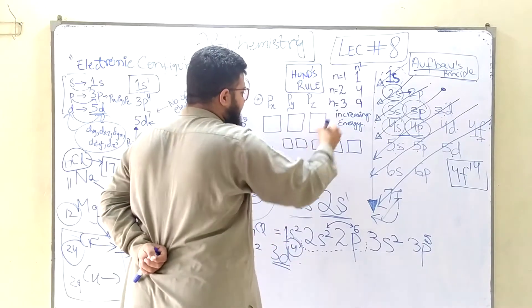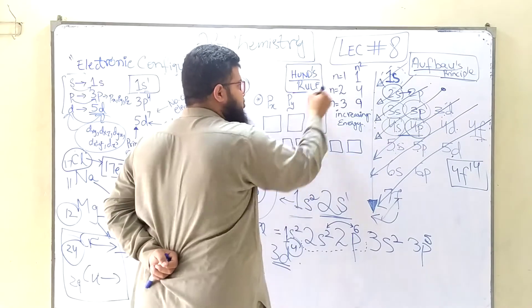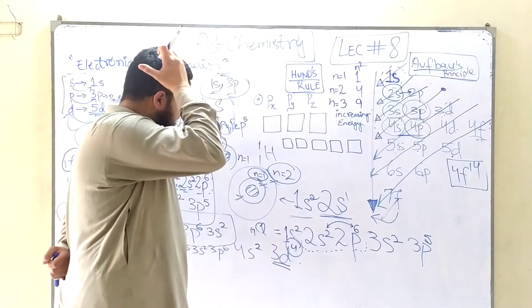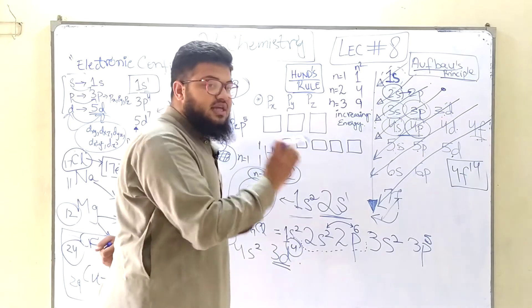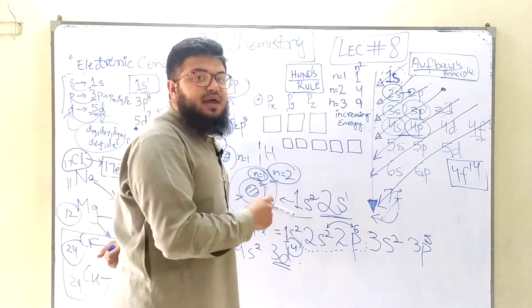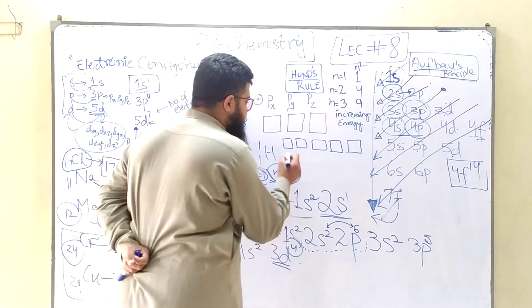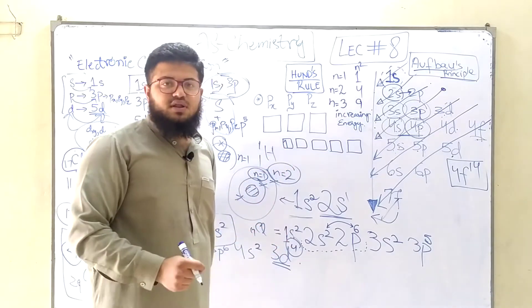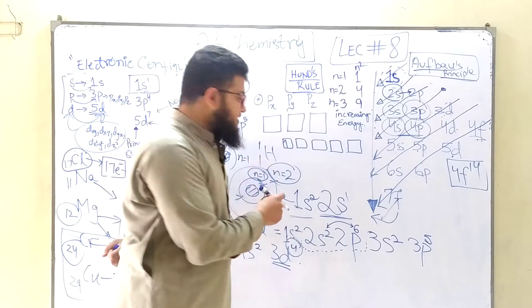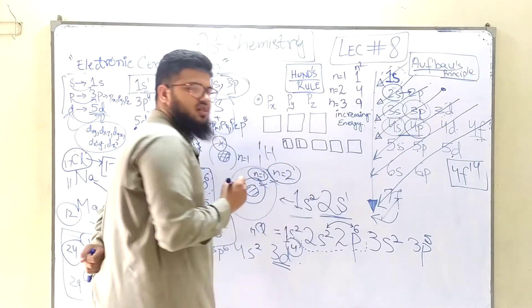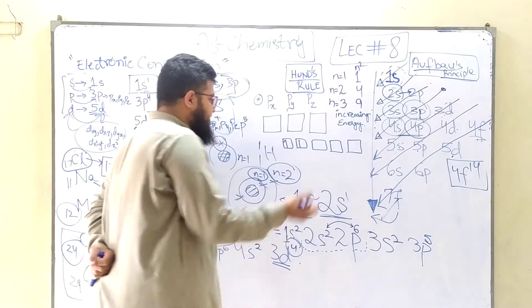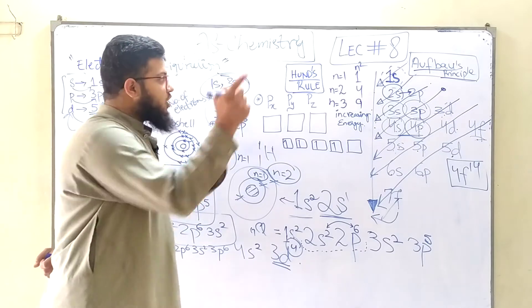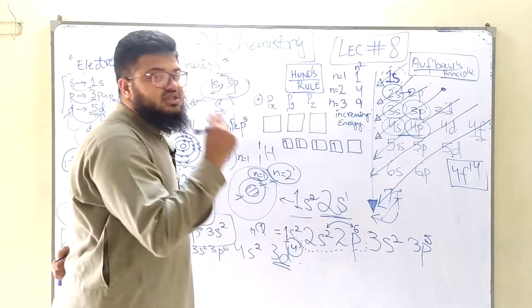Meanwhile, I will also explain Hund's rule. Hund's rule says that the electrons will always be added to the empty orbitals first, and then they will get paired up. So the first electron is added to one orbital, the second electron will not come to that orbital because it has been partially filled — it goes to the next orbital. Then the third and the fourth. Empty seats will be filled first according to Hund's rule; you are going to fill in the orbitals singly first.